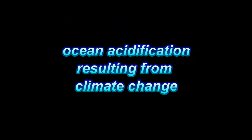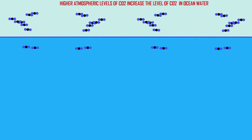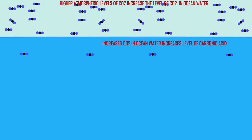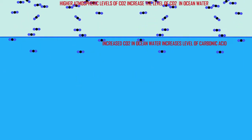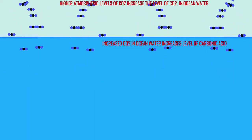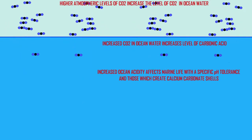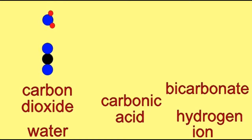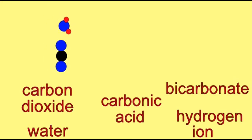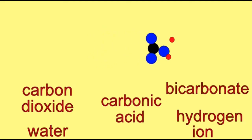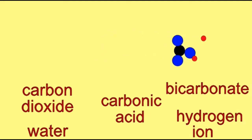As levels of carbon dioxide in the atmosphere increase, this increases the amount of carbon dioxide dissolved in ocean water. Much of this can react with water molecules to form carbonic acid, which increases the acidity of ocean water, decreasing its pH. This can affect marine life.